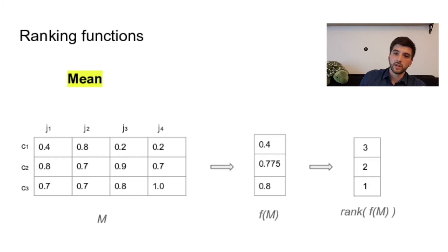The next ranking function is the median. So in the same way, you just take the median score for each candidate and then rank them. And you can already notice that the ranking produced differs. So in this time, we have a tie between C2 and C3. So the choice of the ranking function really can have an impact on the ranking produced.